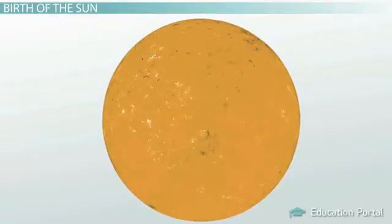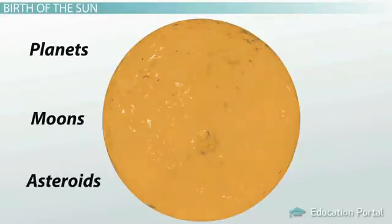The rest of the material that didn't settle into the center of the disk formed the planets, moons, asteroids, and other parts of the solar system.